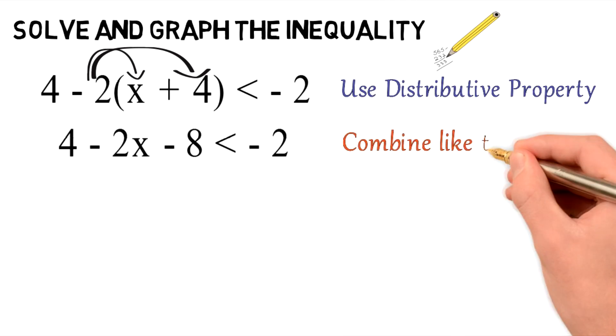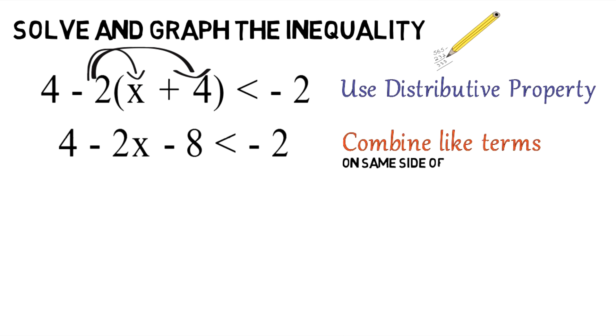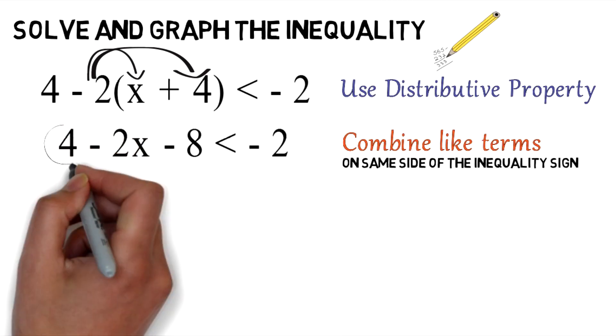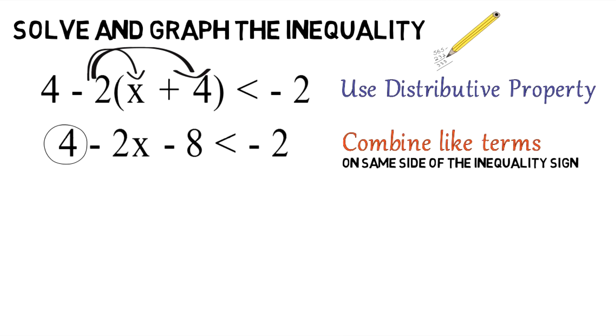At this point, you should combine like terms. Remember, combine like terms on the same side of the inequality sign. On the left side, you can combine 4 and negative 8.